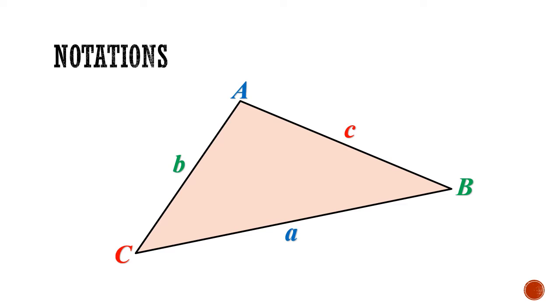We use small letters to denote the length of the edges of the triangle. For the formulas later, we need to be clear about this labeling pattern. Side A is opposite angle A, side B is opposite angle B, and so on.